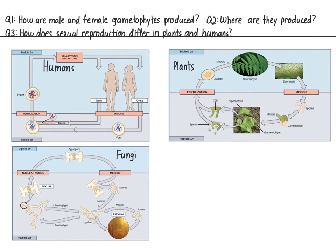Fungi are kind of the opposite. Most of their life cycle is spent as a haploid organism, which can reproduce asexually or sexually. If it reproduces sexually, the diploid cells only divide by meiosis, making the organism haploid again right away. Plants are sort of in between humans and fungi. Sometimes the plant is a diploid plant called the sporophyte, while at other times the plant is a haploid plant, or gametophyte.